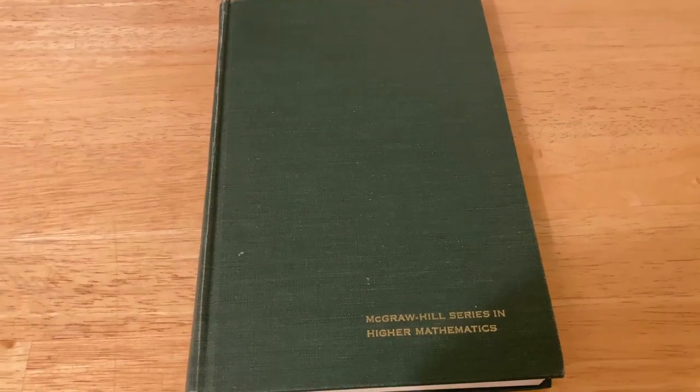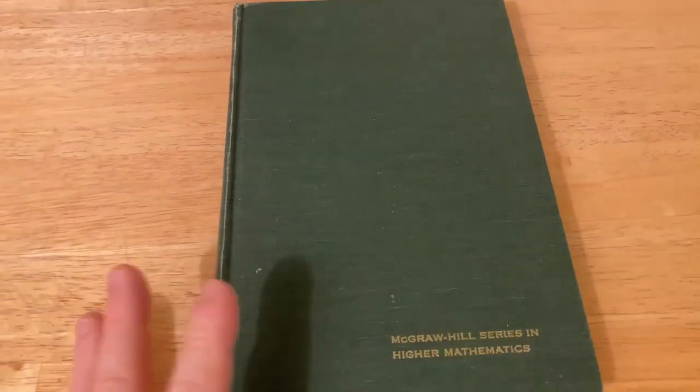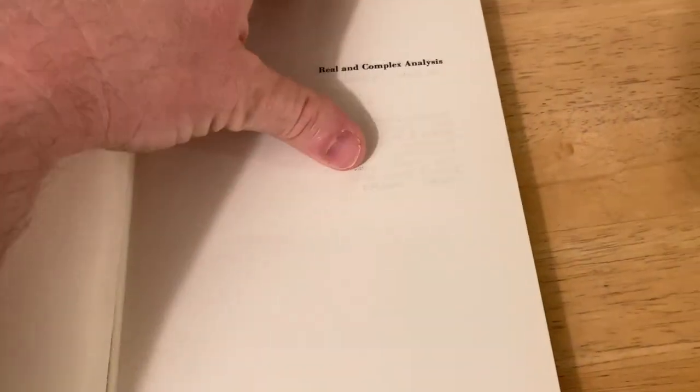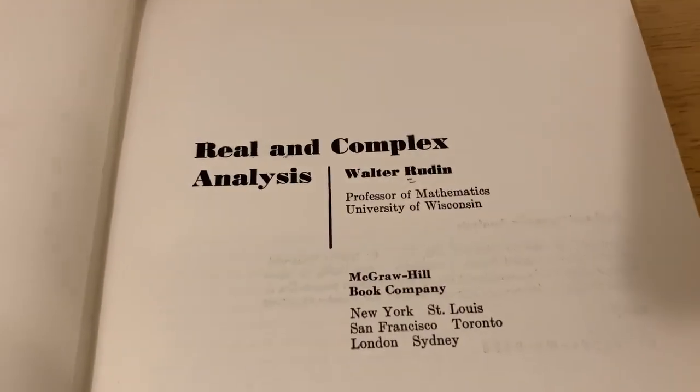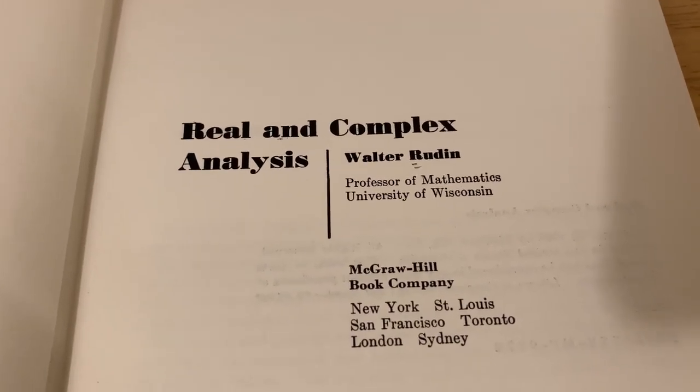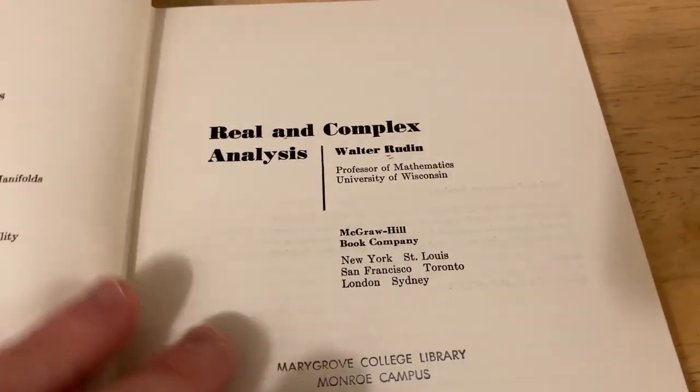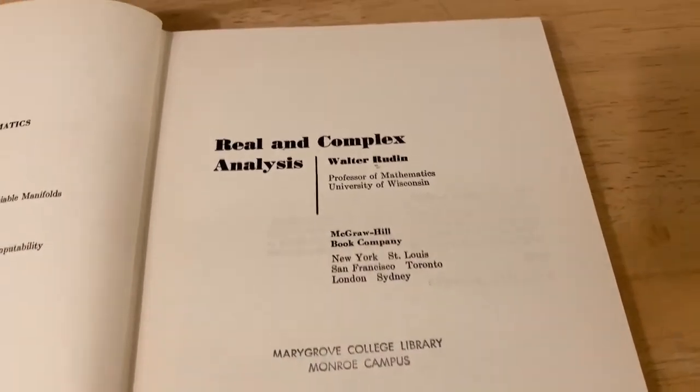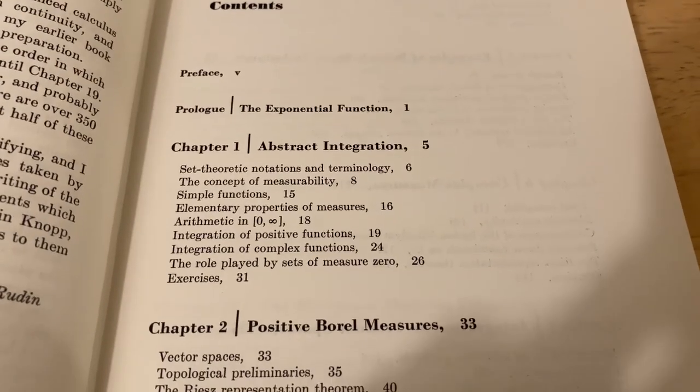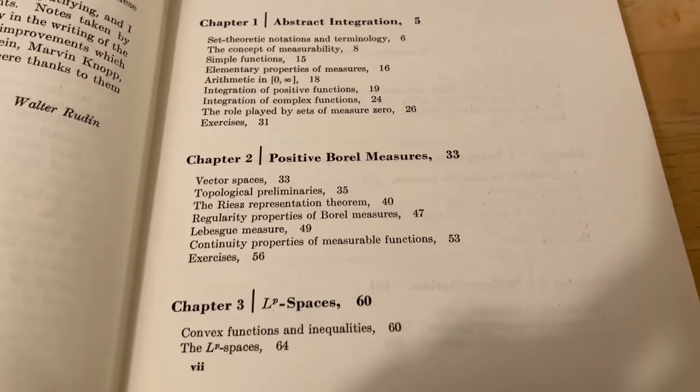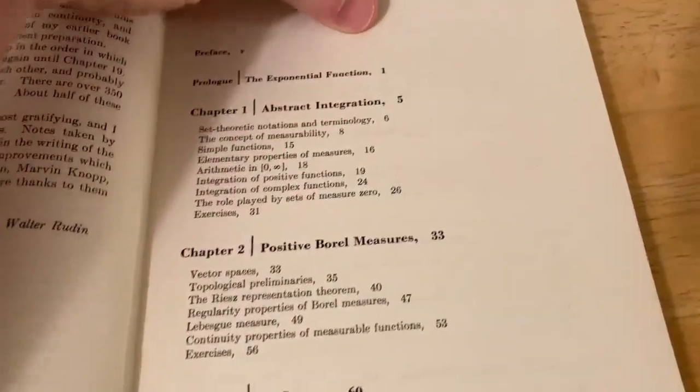This is a book that is way beyond calculus. This is a book on real analysis. And this book is so famous, it has a nickname. It's called Papa Rudin. And it's called Real and Complex Analysis, written by Walter Rudin. I'm going to open it up so you can look at it. This is a book that you would use in graduate school. Your first year in graduate school, you would take a course on analysis, and this is an example of a book that you might use. This is considered a very advanced book. Most students who read a book like this do not understand it.